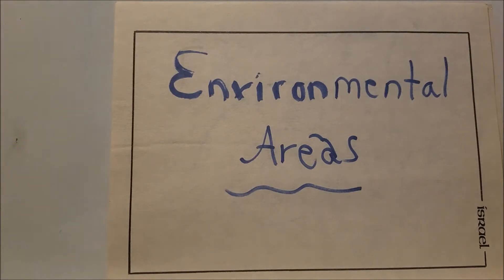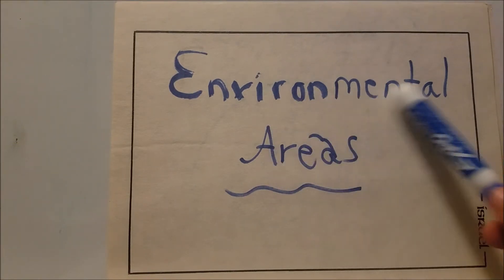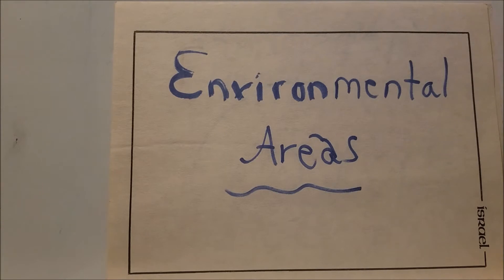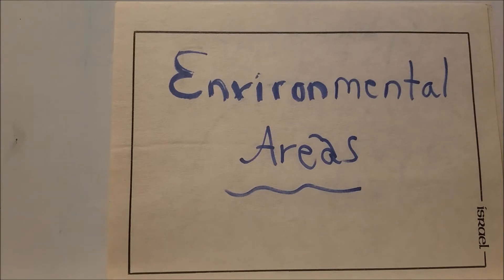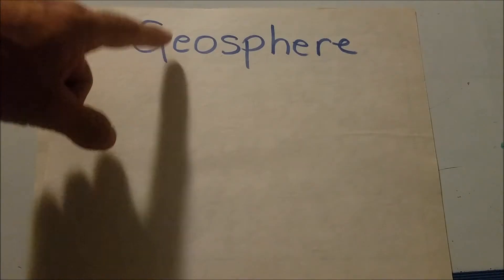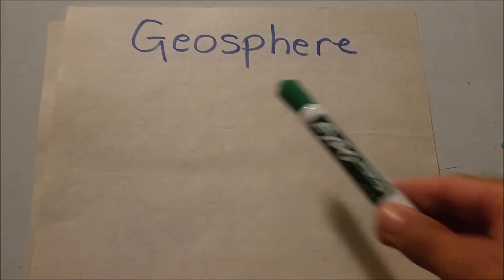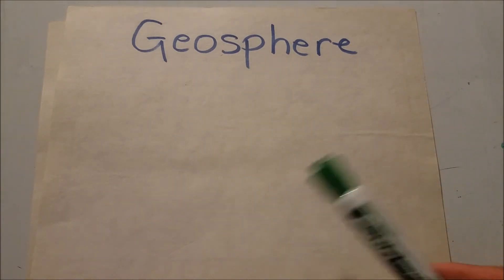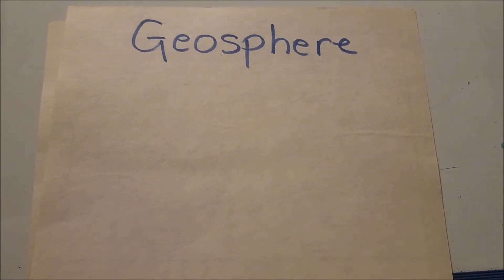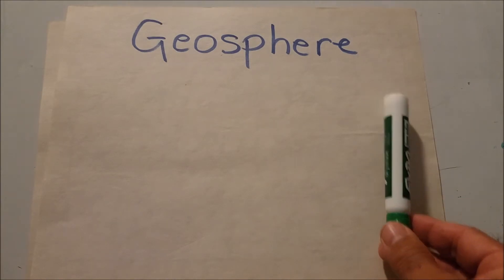All these areas are environmental areas — sections of the earth we're going to talk about. Some we live in, some we don't, some we enter and some only a few have entered. All these systems together are called the geosphere. Geo means earth. There's some conflict here — some people think the geosphere is just the land area of the earth, while others say it includes all the spheres.